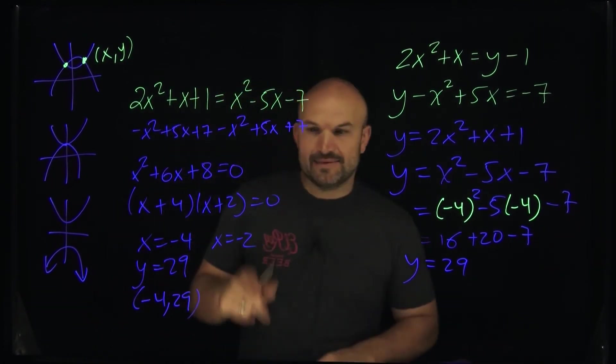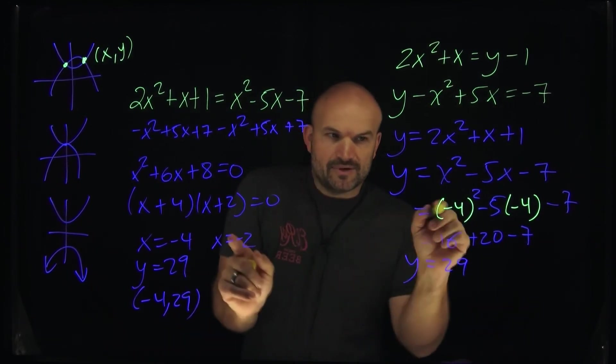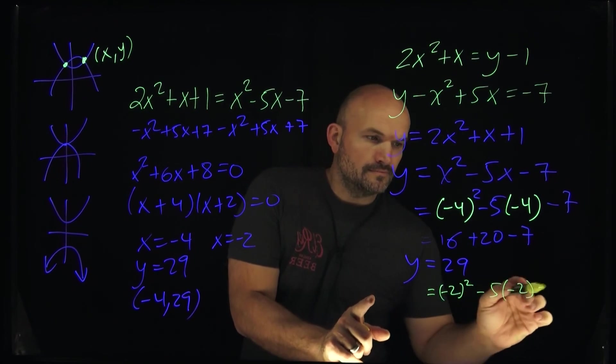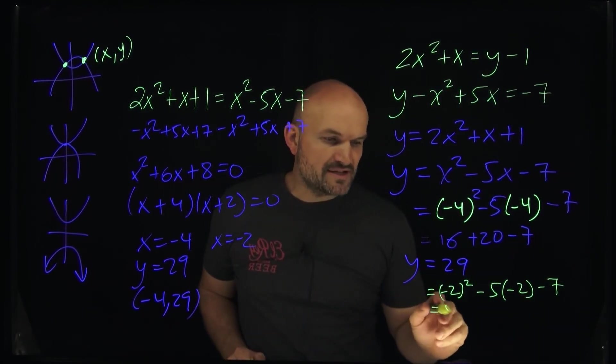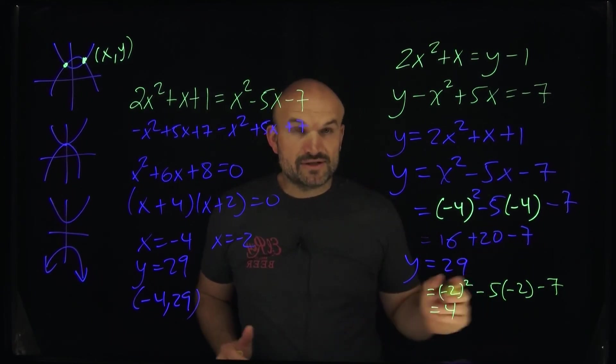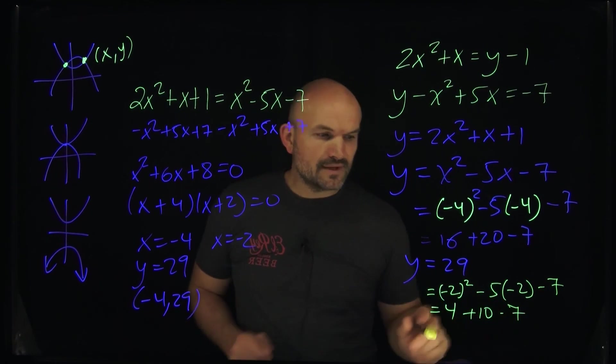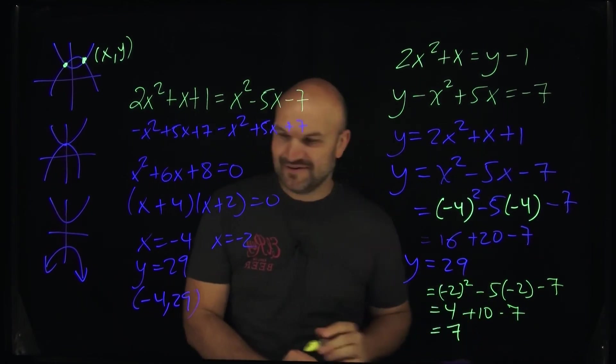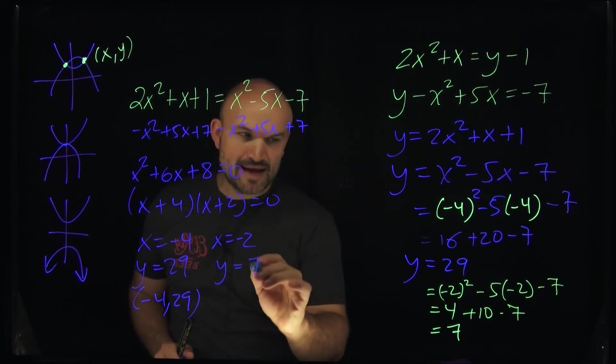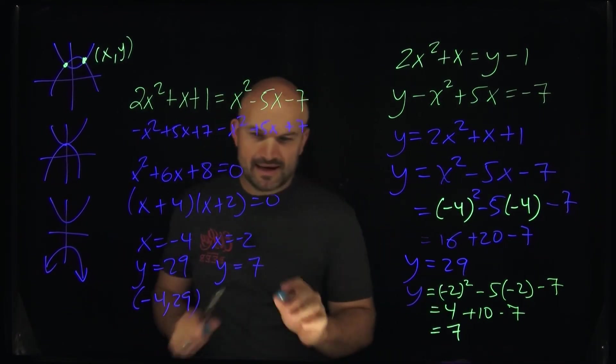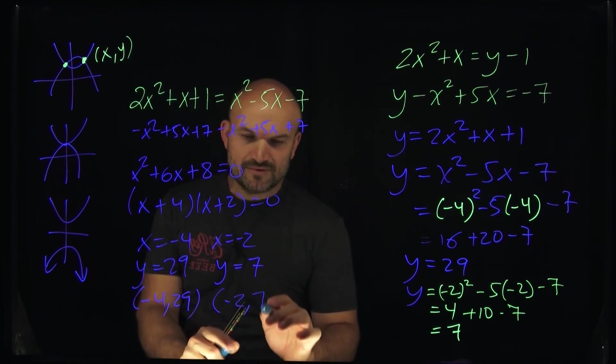Now let's go ahead and do the exact same thing for the negative 2. We already know what's going to be going on here. We're just going to plug this in. Negative 2 squared is going to be a positive 4. Negative 5 times negative 2 is going to be a positive 10. And minus a 7. And now you can see that'd be 3 plus 4. That's going to equal a 7. Very good. So now we have a negative 2. And then we can say Y is equal to a positive 7. And therefore, now we can say that we can write this coordinate point as a negative 2, comma, a 7.